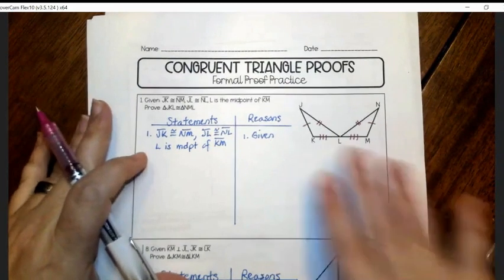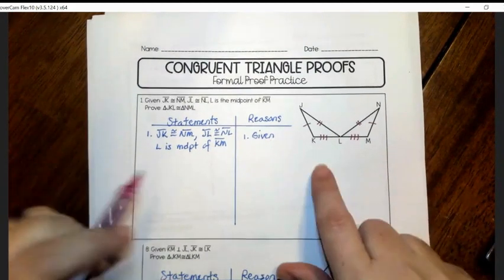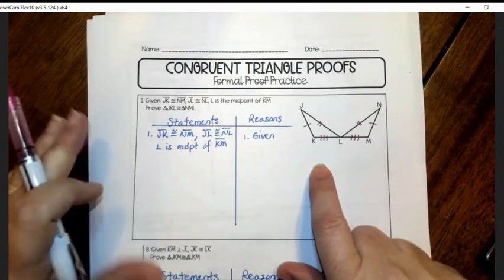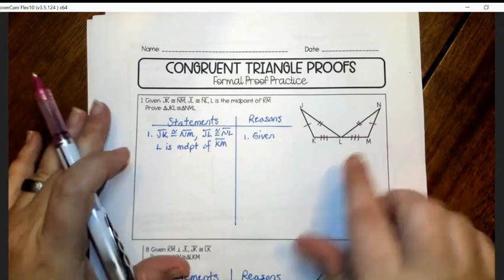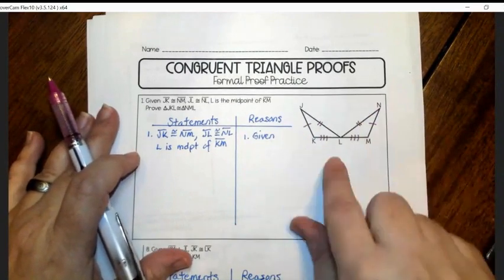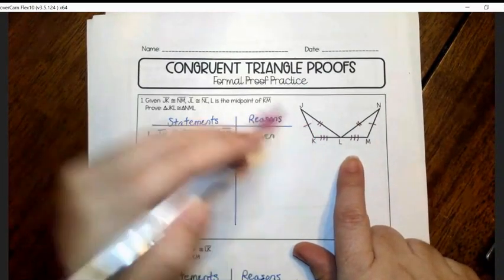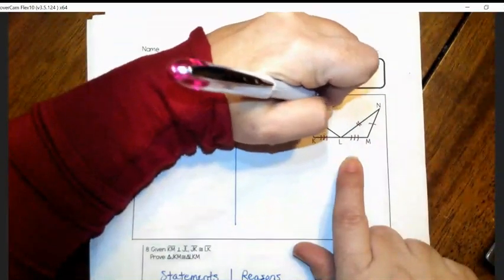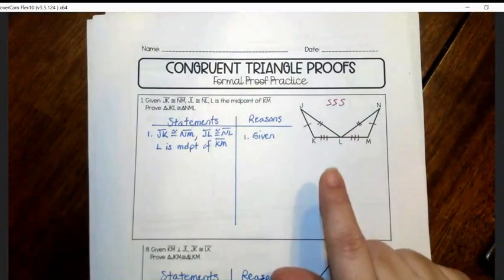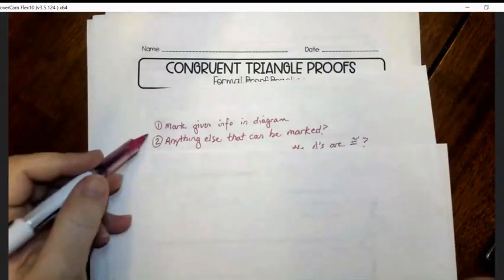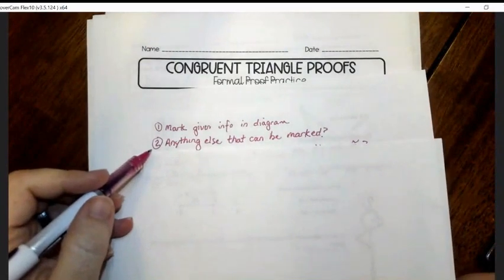So I have the picture marked with the information that they have given us in the given. Now I have to ask myself which one of the theorems would I use to prove these triangles are congruent. So all the sides are marked. So this would be side, side, side. Okay, so we've done one, two, there wasn't anything shared, no vertical angles.